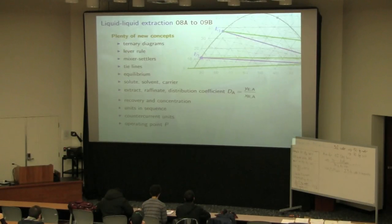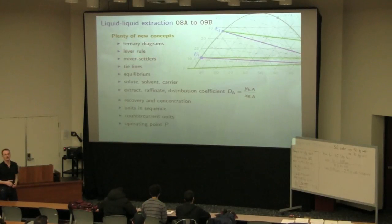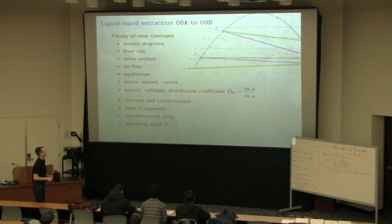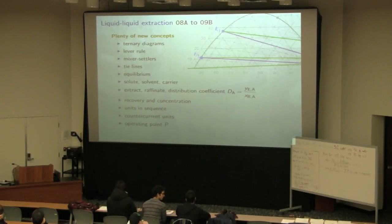Then we moved on to liquid-liquid extraction for a few classes. There's just a ton of new concepts here. Some of which were familiar from the chemistry undergraduate classes, ternary diagrams, lever rule, tie lines, and equilibria. And we pulled it all together by looking at how extractors worked. We looked at distribution coefficients, extract streams, raffinate streams, and you guys are working through an assignment now on this. So this is at the top of your head. So none of this should be strange to you. We then ended off this section by looking at counter-current operation and then the operating line that's out there on the raffinate side of the ternary diagram. So plenty of new concepts there, but relatively straightforward material, especially given its graphical nature. It's easy to understand what's going on there.